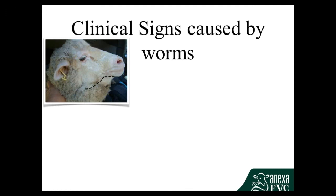Now some photos of clinical signs. This first sheep in the top left — that black dotted line is the normal line of the jaw, showing how she should look from the side. As you can see, beneath that line there's a lot of extra tissue. This is called bottle jaw, where fluid accumulates predominantly under the jaw and on the brisket, due to low protein levels in the blood caused by worm damage to the intestine or severe anaemia from barber's pole.